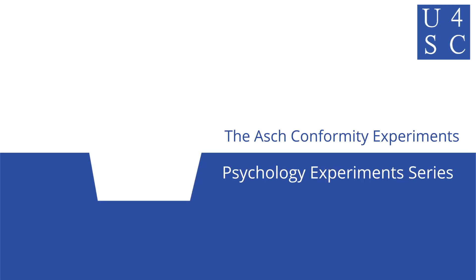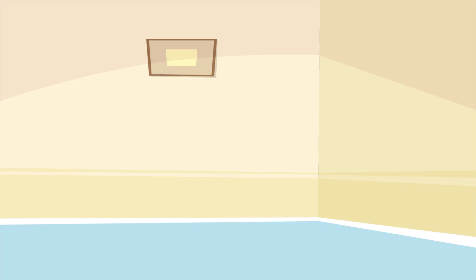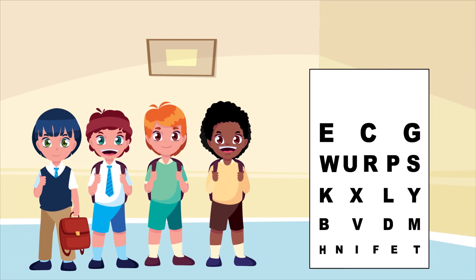Academy for Social Change presents the Asch Conformity Experiments. Your school is having students take their annual vision test, but to save time, they're having multiple students go at once.